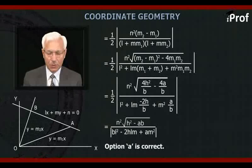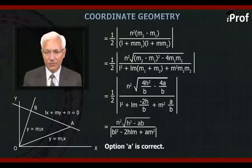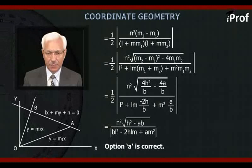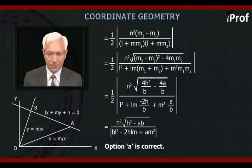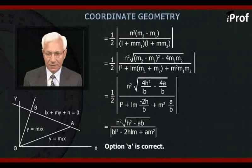This equals (1/2)|N²| · √((M1 + M2)² - 4·M1·M2) / ((L + M·M1)(L + M·M2)). Substituting the values, that is (1/2)|N²| · √(4H²/B² - 4A/B) divided by the denominator, which simplifies to N²√(H² - AB) / (AM² - 2HLM + BL²), which is Option A.